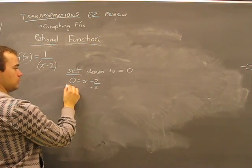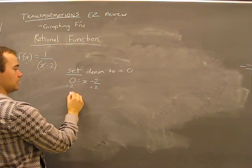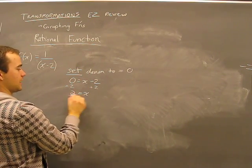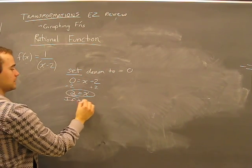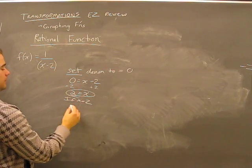So we have zero equals x minus two. Get rid of the two, get x by itself. Two equals x. What this means is that if x equals two, then there's no solution.